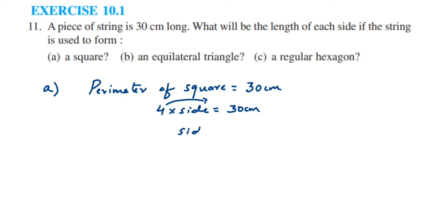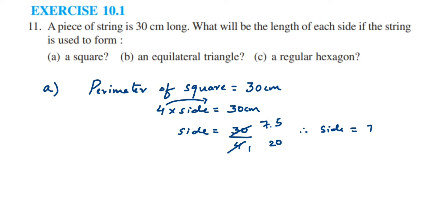Now we transpose 4 to the other side. Since 4 is in multiplication, it comes to the other side as division: side = 30 ÷ 4. Since 30 doesn't divide evenly by 4, we get a decimal. We know 4 × 7 = 28, remainder 2; adding a decimal and a zero gives 20, and 4 × 5 = 20. So side = 7.5 cm. Therefore the side of the square is 7.5 cm.